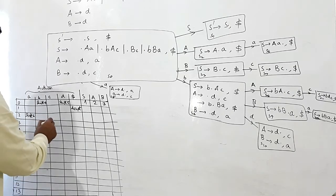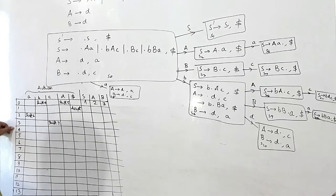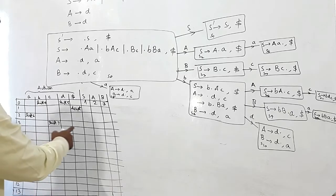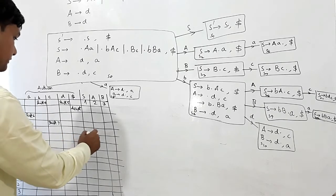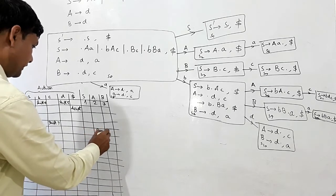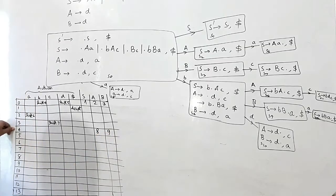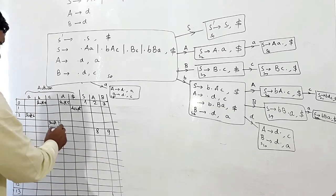In state 3, shift 7. In state 4, if I read capital A I am reaching state 8, and capital B goes to state 9. If I read small d I am reaching state 10, so I write shift 10.